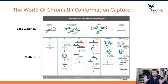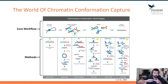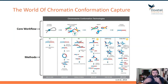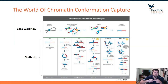Once you have those digested fragments, you allow the ends to ligate, and how those ligations occur is based on the 3D structure — you're going to ligate not necessarily what's next to you in linear space, but something that's close to you in three-dimensional space. You then reverse those cross-links, leaving a chimeric molecule where that junction reflects an interaction in 3D space.